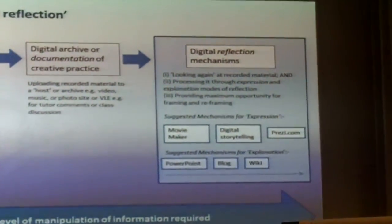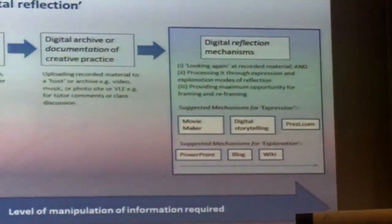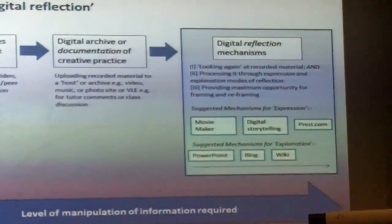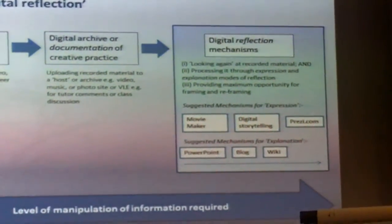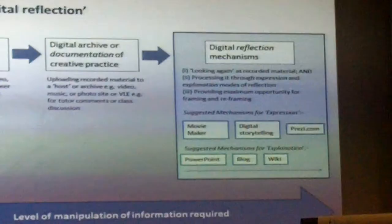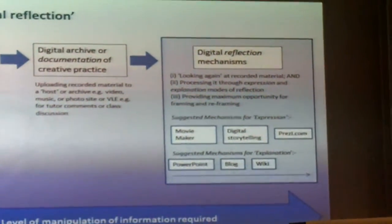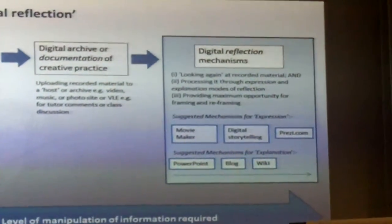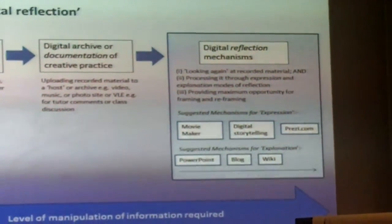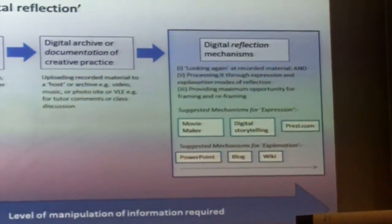And then over on the far side, with a high level of manipulation, are what I call digital reflection mechanisms. These are things that enable you to both look again at what you've recorded, but also to process it through both forms of reflection — through expression and through explanation. These are technologies that provide maximum opportunity for framing and reframing. I'm thinking about things like Movie Maker or iMovie on the Mac that enable you to put a movie together from little bits of video, photo stills, add text, have information over the top — so you can make a really complex video from little bits and pieces that you might have gathered.